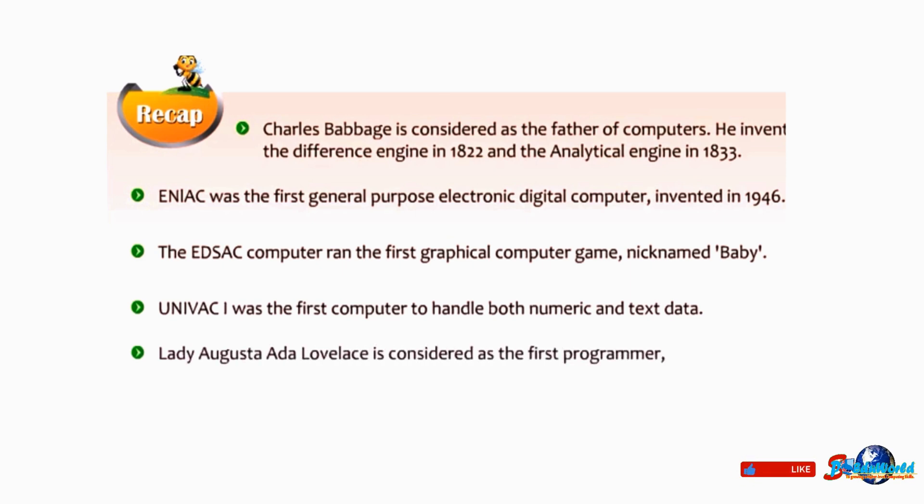The first generation computers were based on vacuum tubes. The second generation computers used transistors in place of vacuum tubes. The third generation computers were based on integrated circuits.